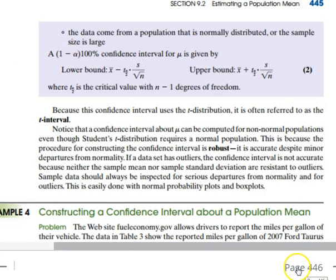Continuing on the next page, it says that our sample data needs to come from a population that is normally distributed. And if the population isn't, if it's skewed one way or the other, we just need to make sure our sample size is large.